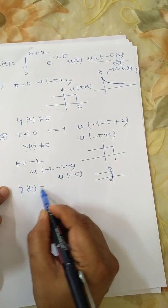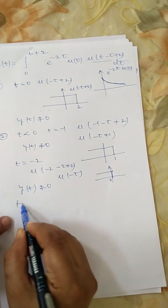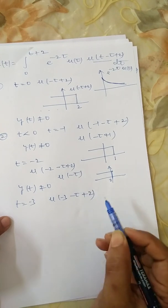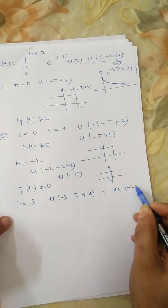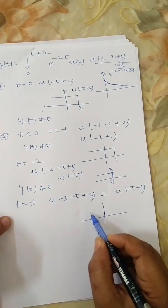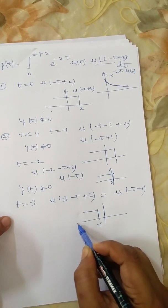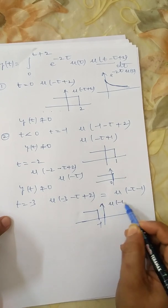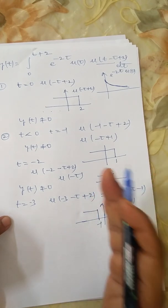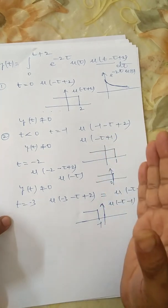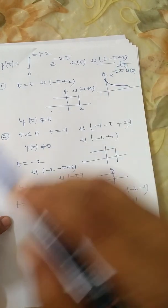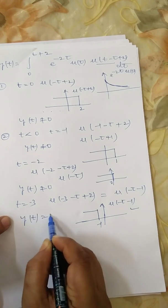Taking t = −3: u(t − τ + 2) becomes u(−τ − 1). To find this signal: u(τ − 1) exists from 1 to +∞; reflecting it gives a range of −1 to −∞. There is no overlap with the first signal (which exists from 0 to +∞), so multiplication is not possible and the output is 0.